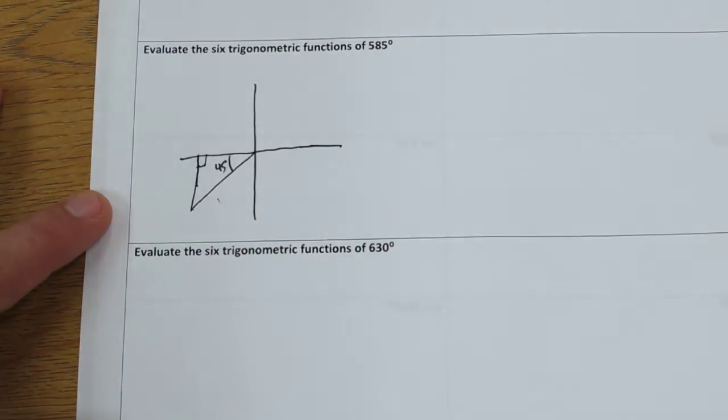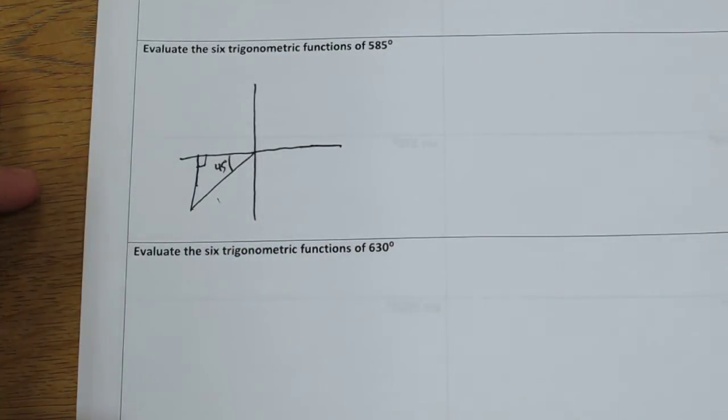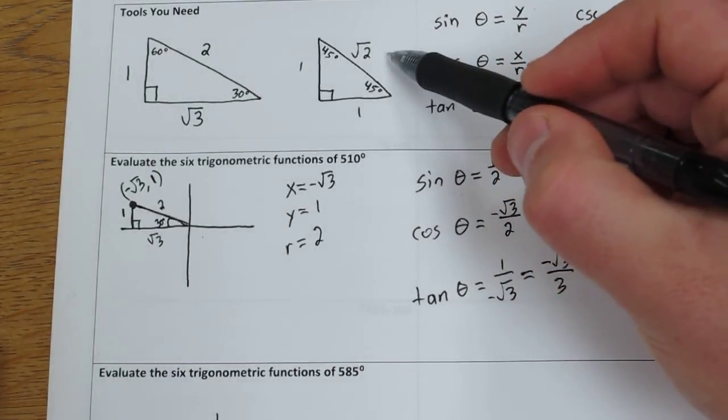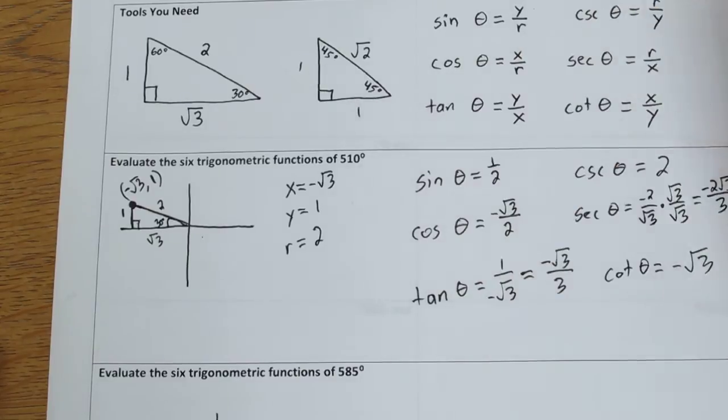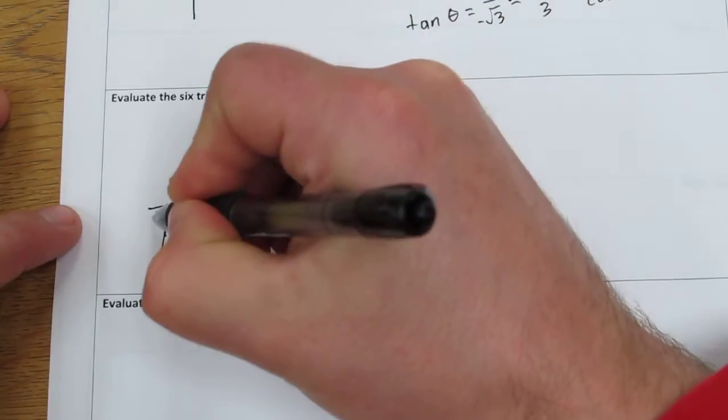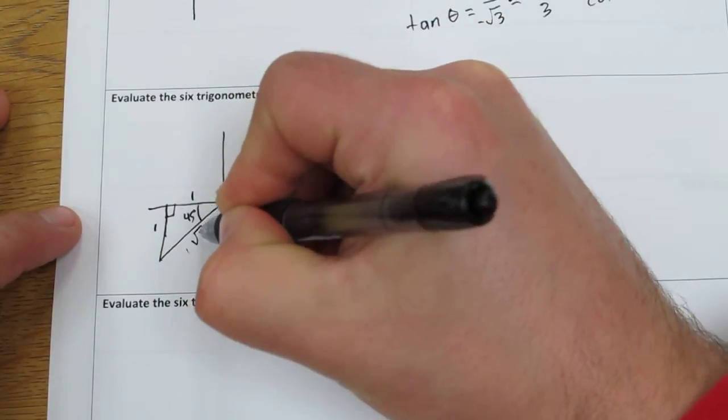Here we have a 45-45-90 triangle, which if we go back up to here, we can label the hypotenuse as rad 2 and those sides as 1 and 1, the legs. So this length is 1, this length is 1, and this is rad 2.